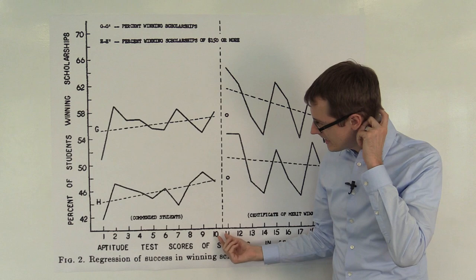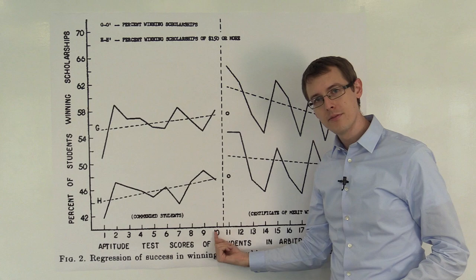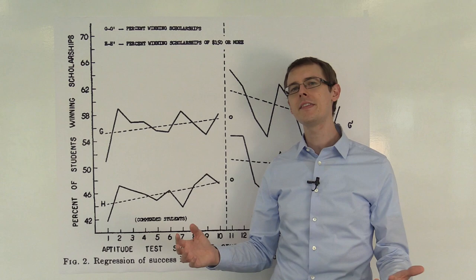So, here, by the cutoff, the basic idea is that the people who are just below the cutoff are essentially the same as the people who are just above, that if they had taken the test on a different day, maybe the person who scored a 10 would have gotten an 11.